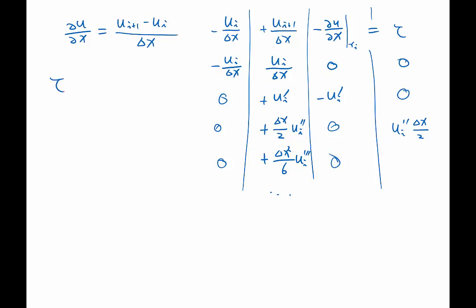So in this case, my tau is O what? Just delta x, no square.